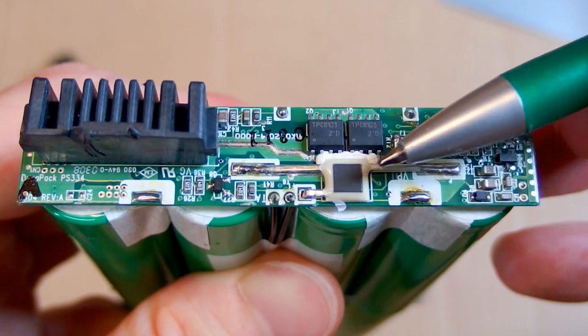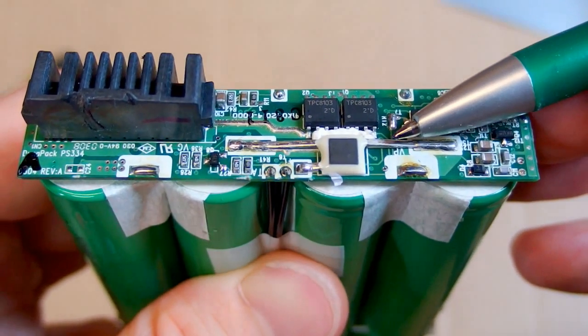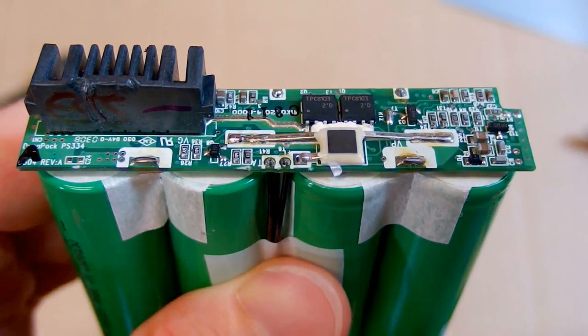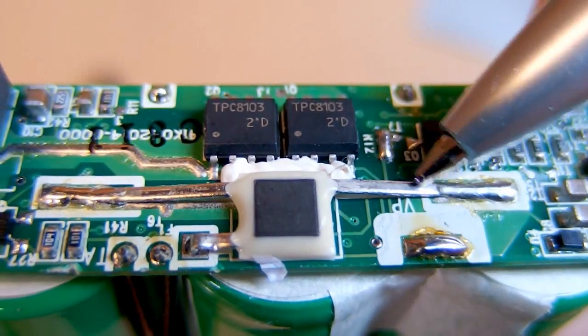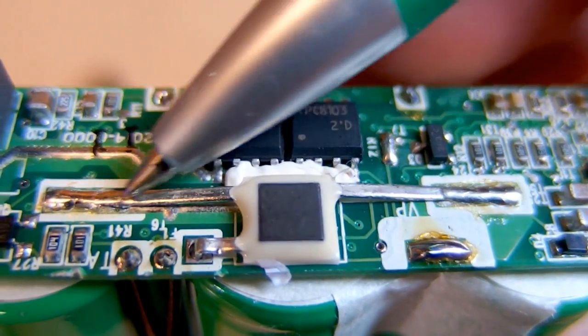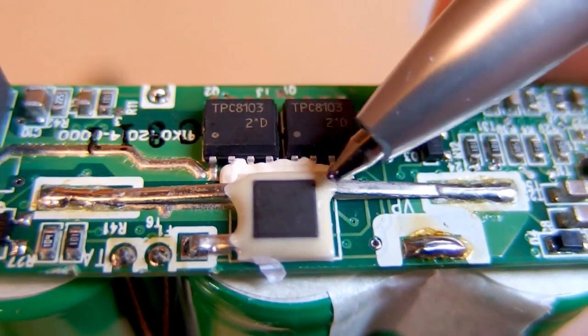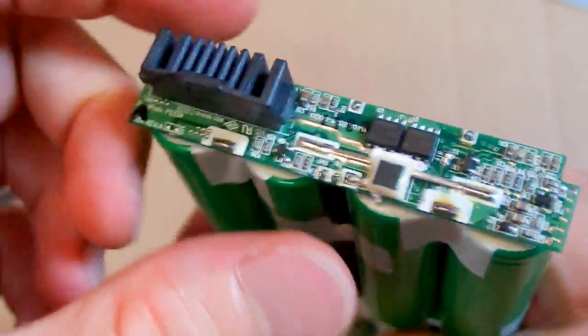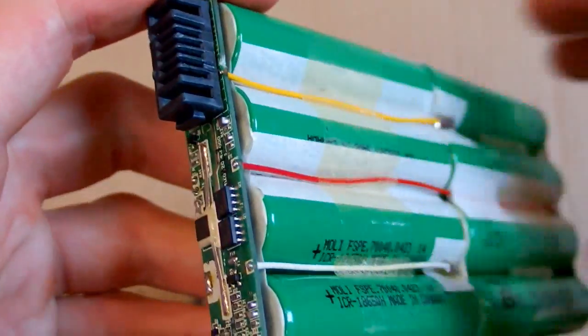Is it a temperature sensor or some current sensing shunt? That's weird, because this wire going through it is quite thick. I guess this is sensing the charging or discharging current. So let's open it further, because I'm expecting some chips from the other side.